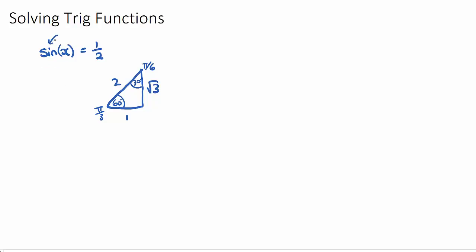Okay, sine is opposite over hypotenuse. So what we want to do is we want to think about sine of what angle, and we want to be looking at the angles in our triangle, sine of what angle is going to be 1 over 2.